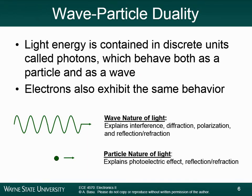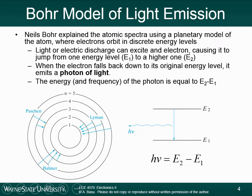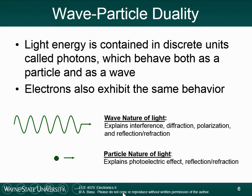Moving on to wave-particle duality: light energy is contained in discrete units called photons, which behave both as a particle and as a wave. We're going to talk about two types of particles relevant to electronics and the interaction of light with semiconductors: photons and electrons. Both can behave as a particle and as a wave, though there are differences between them.